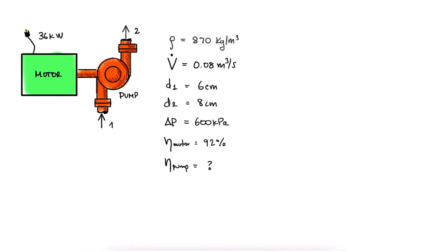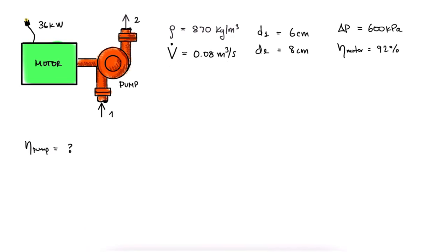We are being asked to find the mechanical efficiency of the pump. During the main lecture video, we learned that efficiency is net output over net input. In the case of the pump, the net output is going to be the mechanical energy gains, meaning what would be on the right-hand side of the conservation of energy equation.